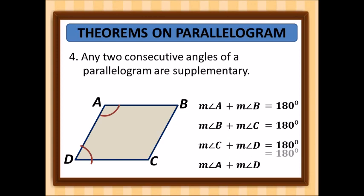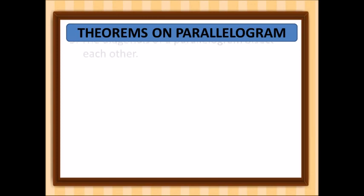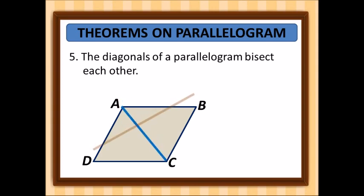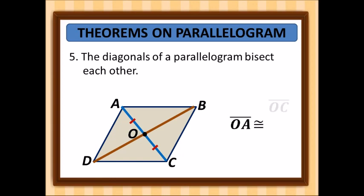The fifth theorem: the diagonals of a parallelogram bisect each other. If the diagonals intersect at point O, then OA is congruent to OC, and OD is congruent to OB.